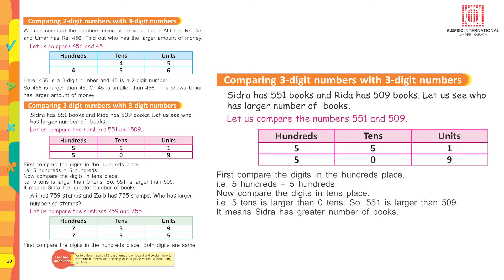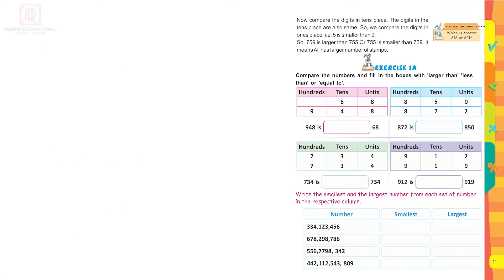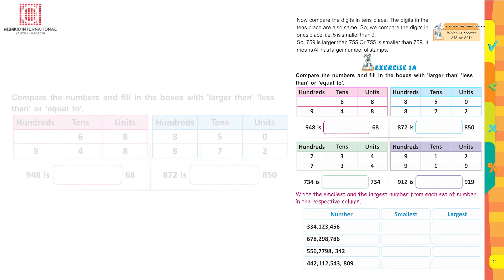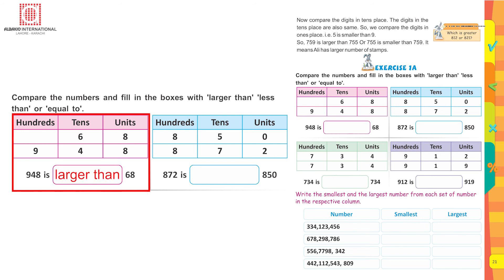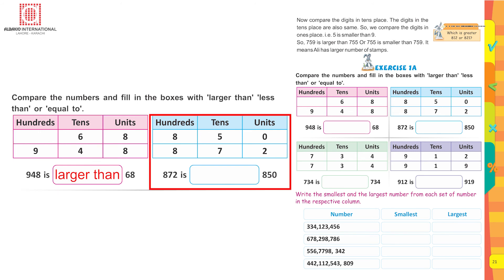It means Sidra has the greater number of books. Exercise 1a: compare the numbers and fill in the boxes with 'larger than', 'less than', or 'equal to'. 68 and 948: 948 is larger than 68.